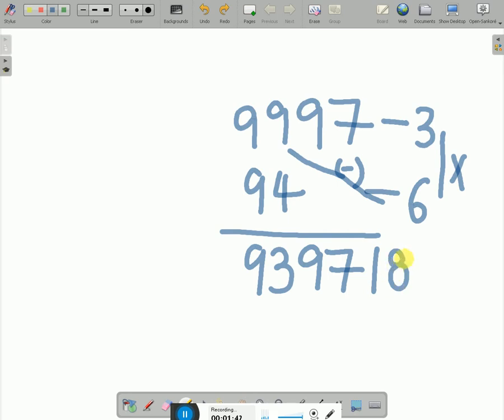That's why we can easily write 18. Then we got 939718 as the answer.